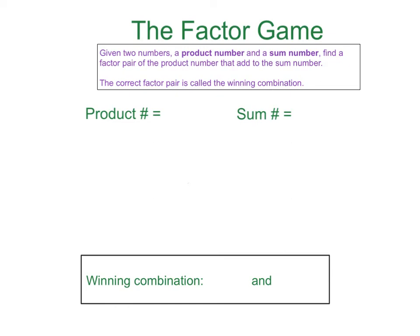Hi, I'm Bob Pryor, and I'm here to talk to you today about the Factor Game. It is a game, and it has a winning combination. The Factor Game rules are this: we are given two numbers, a product number and a sum number, and our job is to find a factor pair of the product number that add to the sum number. The correct factor pair is called the winning combination.